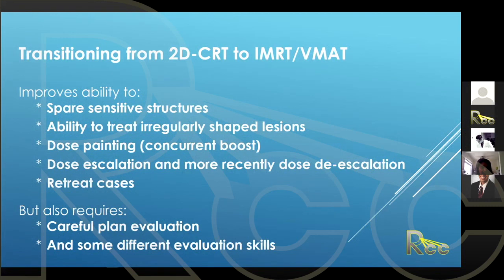One obvious advantage is the ability to spare sensitive structures like parotids, which gives a better quality of function to the patients. We can also treat irregularly shaped lesions — all head and neck contours come in all sorts of shapes, and being able to have dose tightly around just the target while sparing all the normal structures surrounding it means we can spare a lot of normal tissue.